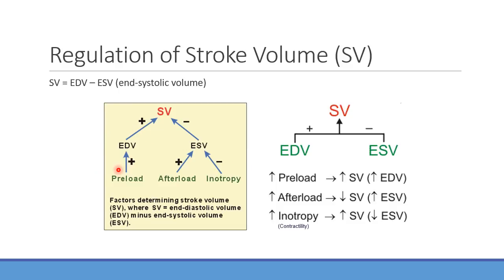Increasing preload has a positive effect on end-diastolic volume and increases stroke volume. End-systolic volume is how much blood remains at the end of systole — you don't eject 100% of the blood. When you increase inotropy or contractility, end-systolic volume decreases because you're pumping out a bigger fraction of blood from the ventricle.